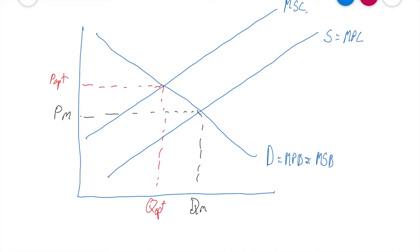Now let's identify the deadweight loss in this case. So if you notice here, our optimum price is higher and our optimum quantity is lower, so it's the opposite in the case of monopoly.